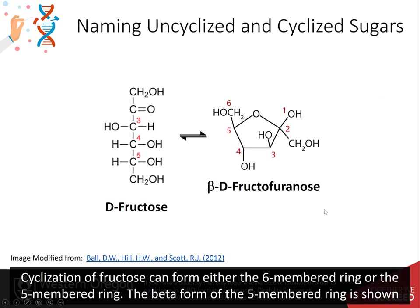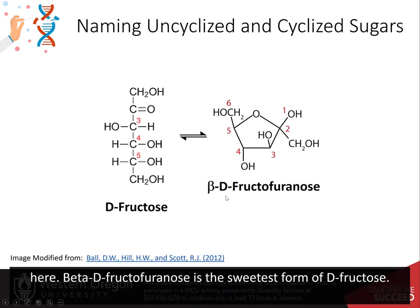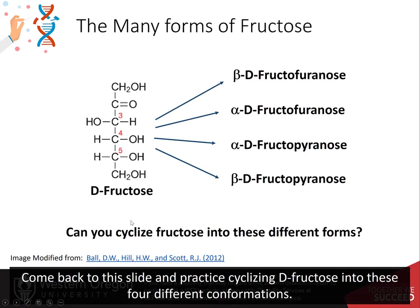Cyclization of fructose can form either the six-membered ring or the five-membered ring. The beta form of the five-membered ring is shown here. Beta-D-fructofuranose is the sweetest form of D-fructose. Come back to this slide and practice cyclizing D-fructose into these four different conformations.